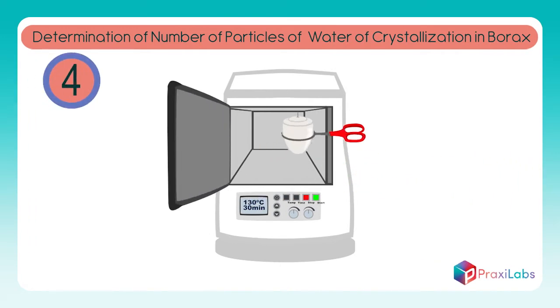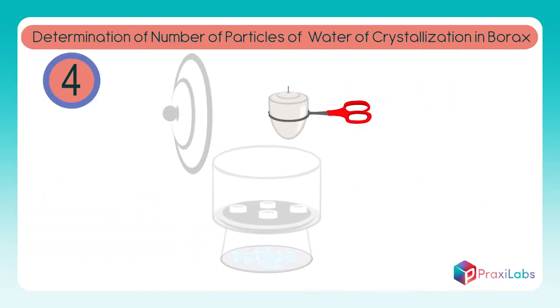Move the crucible from the oven to the desiccator using the crucible holder for cooling.